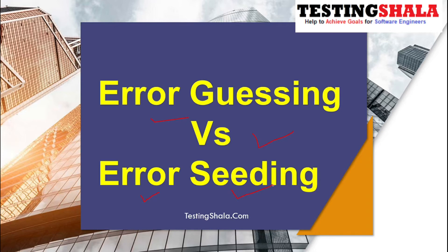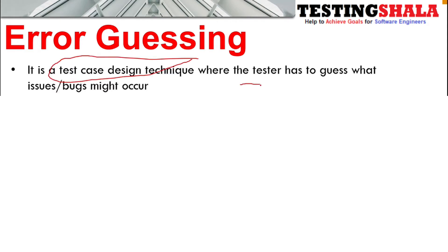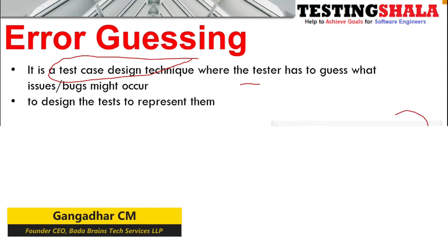We will learn about error guessing versus error seeding. Error guessing is a test design technique where the tester will guess what issues or bugs may occur when we are trying to input or when we are trying to design tests.